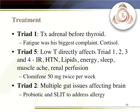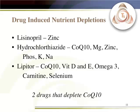His treatment: Triad 1 — he comes in complaining about fatigue, and we know he has high cortisol. Always treat adrenal before you address the thyroid; otherwise you make somebody wired and tired and nobody likes that. Nobody feels good when they get thyroid treatment without addressing the adrenal first. So that really jumps out as something primary we're going to have to address.